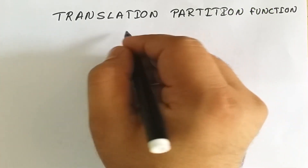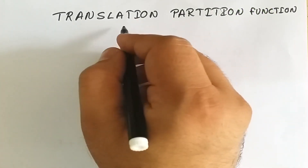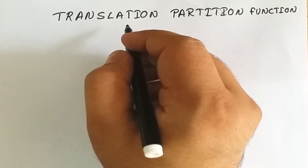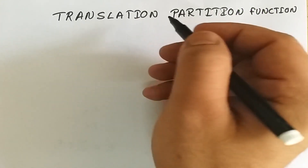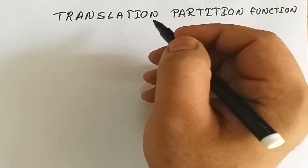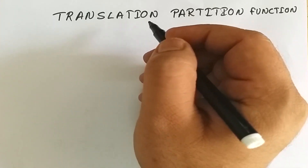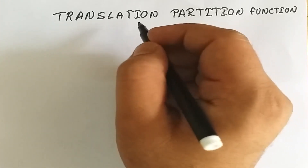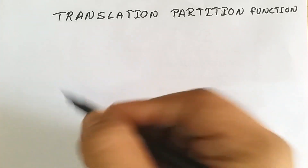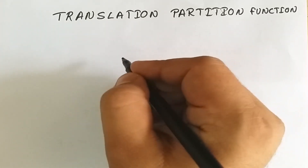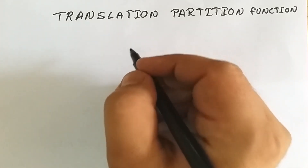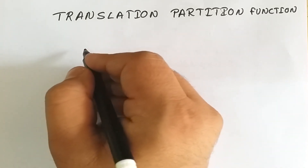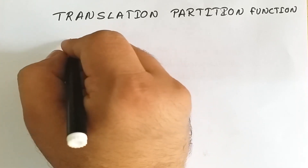Welcome. Today we are going to discuss the translation partition function. The translation partition function arises due to the translation energy arising from the translational motion of any particle. Any unimolecular atom or unimolecular species will show translational motion, and the energy associated with it is known as translation energy.